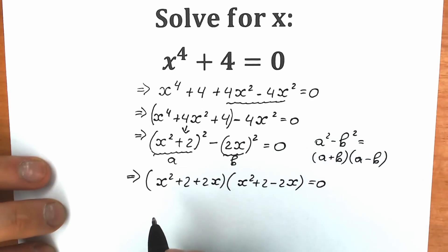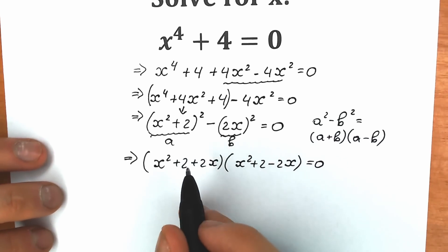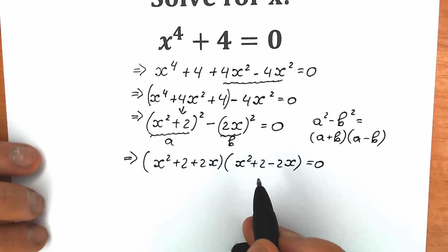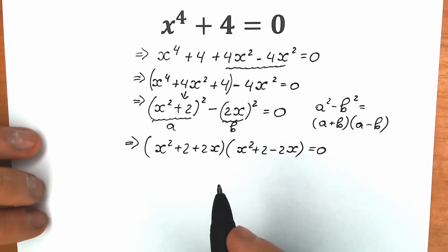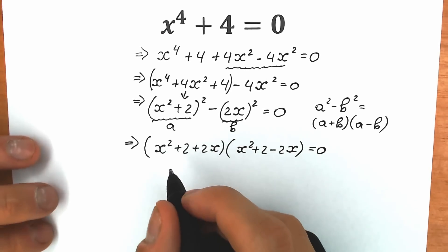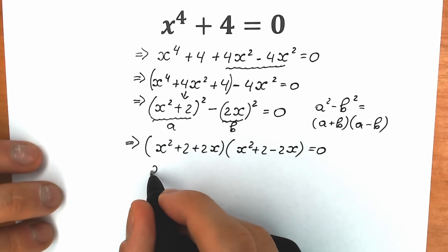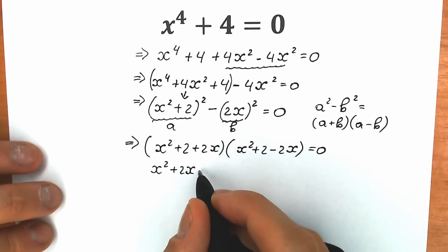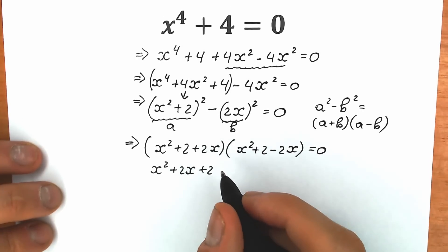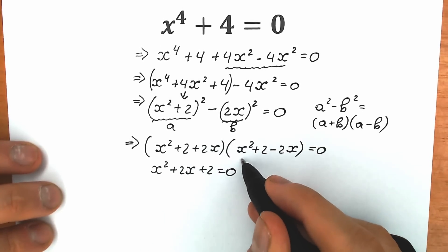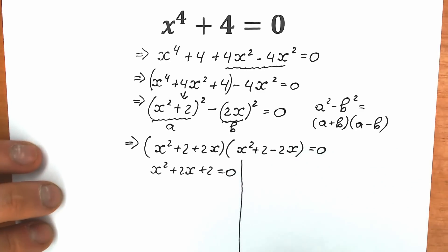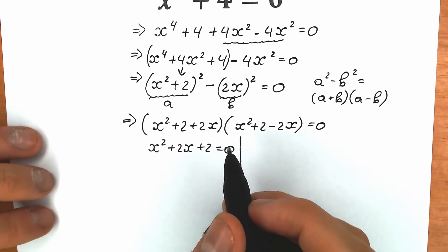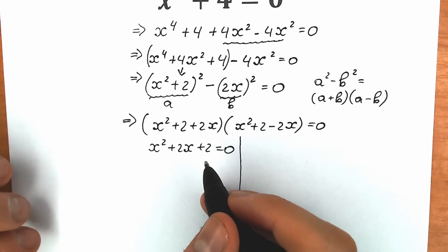We have factored the expression into a product of two parentheses. A product equals zero when the first or the second factor equals zero. Let's start with the first: x² + 2x + 2 = 0. This is a basic school quadratic equation, so we'll use the discriminant formula to find x₁ and x₂.